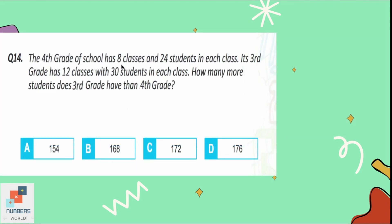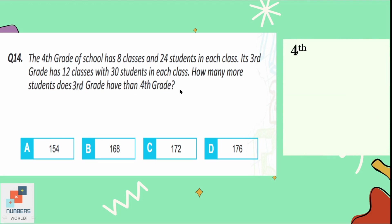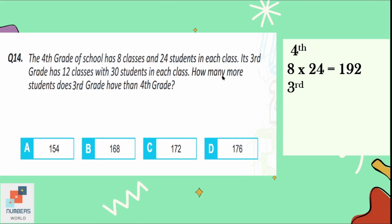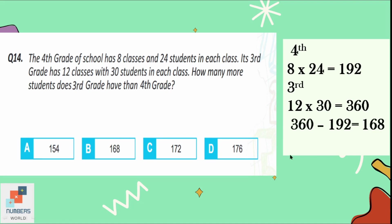Question number 14: the fourth grade has eight classes with 24 students each, and the third grade has 12 classes with 30 students each. How many more students does third grade have than fourth grade? Fourth grade total: 8 × 24 = 192 students. Third grade total: 12 × 30 = 360 students. Subtracting: 360 − 192 = 168. Option B is correct. There are 168 more students in third grade than fourth grade.